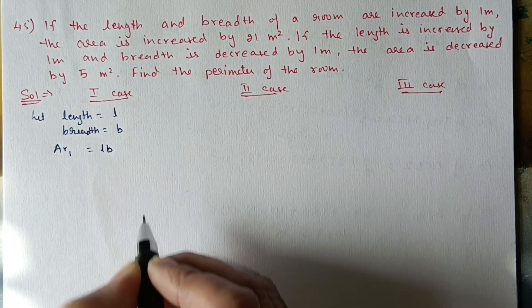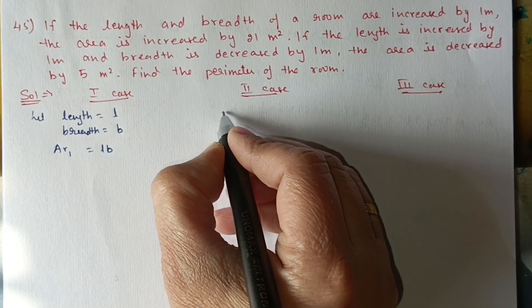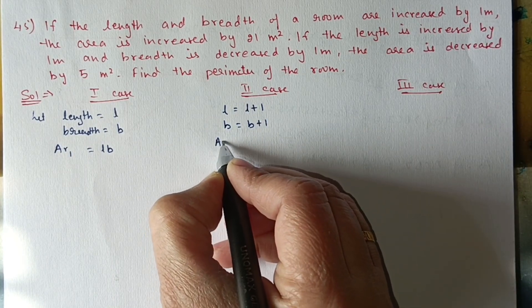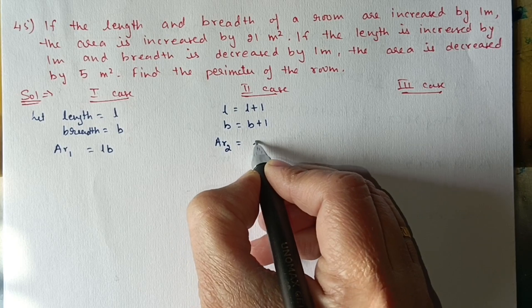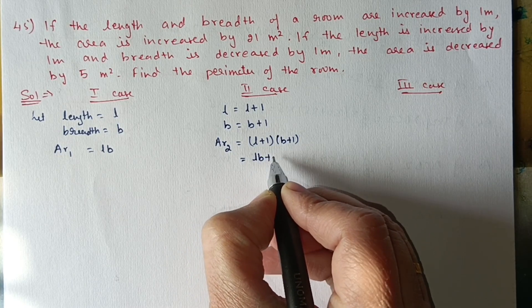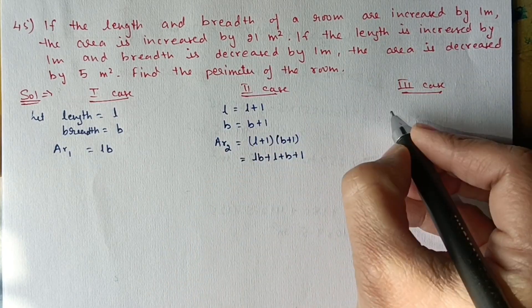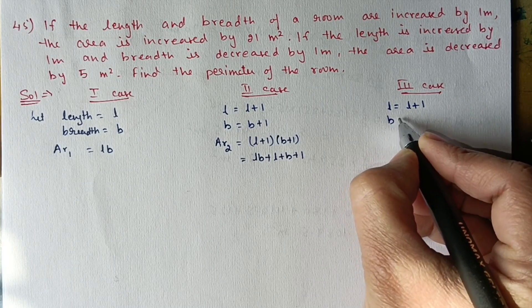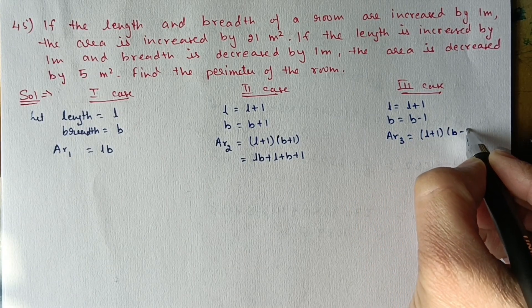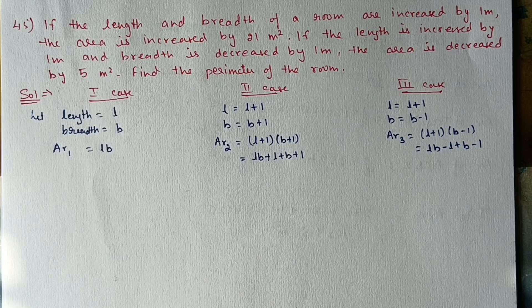Case 2: length = l + 1, breadth = b + 1. New area A2 = (l+1)(b+1) = lb + l + b + 1. Case 3: length = l + 1, breadth = b - 1. New area A3 = (l+1)(b-1) = lb - l + b - 1.